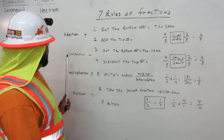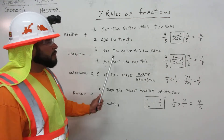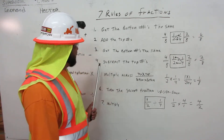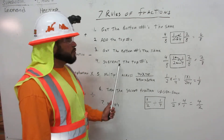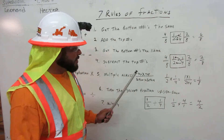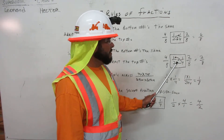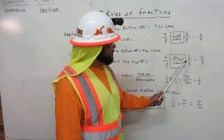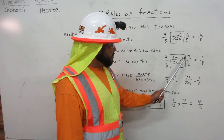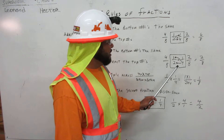Now we have subtraction. You get the bottom numbers the same, and you subtract the top numbers. For example, we have one half minus one quarter. Put a box around it, because we're going to change it — we're going to work on that.